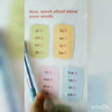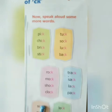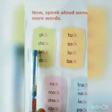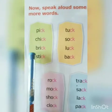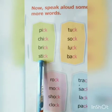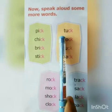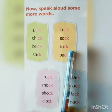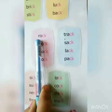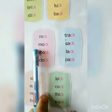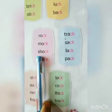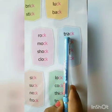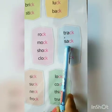Now children, see here — hear more rhyming words with the sound of K. So, listen carefully and repeat after me. P-I-C-K, pick. C-H-I-C-K, chick. B-R-I-C-K, brick. S-T-I-C-K, stick. T-U-C-K, tuck. S-O-C-K, sock. L-U-C-K, luck. B-A-C-K, back. R-O-C-K, rock. M-O-C-K, mock. S-H-O-C-K, shock. C-L-O-C-K, clock. T-R-A-C-K, track. S-A-C-K, sack.